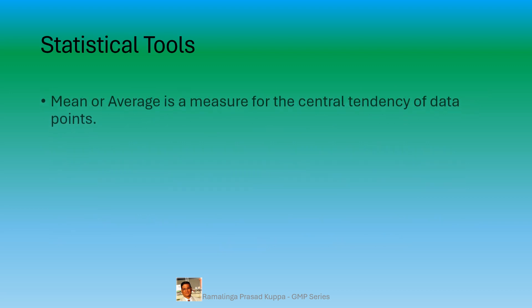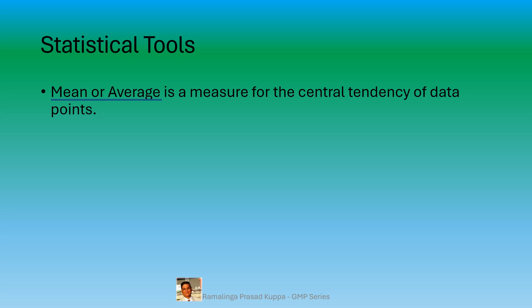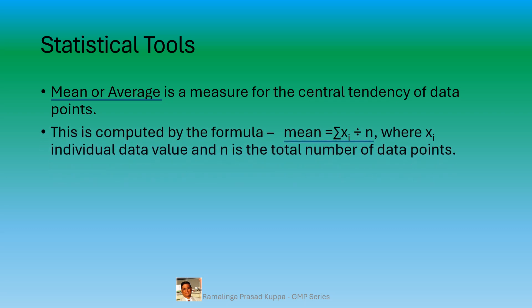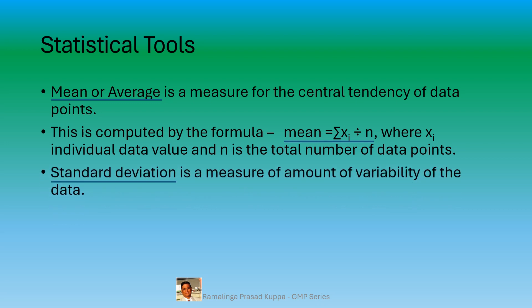Mean or average is a measure of the central tendency of the data points. This is a basic statistical tool computed by the formula: mean equals the sum of all individual values divided by n, where xi is the individual data value and n is the total number of data points. Sum all data values and divide by the total number to get the average.